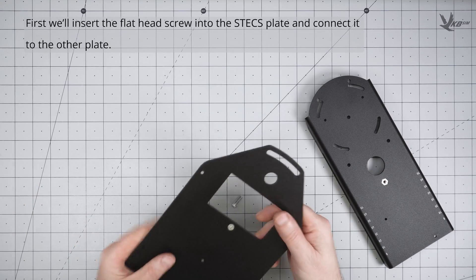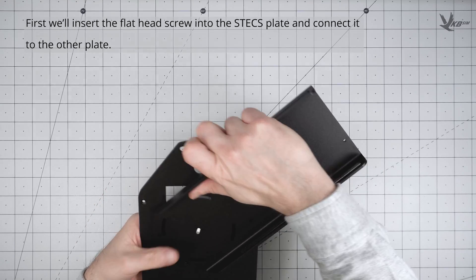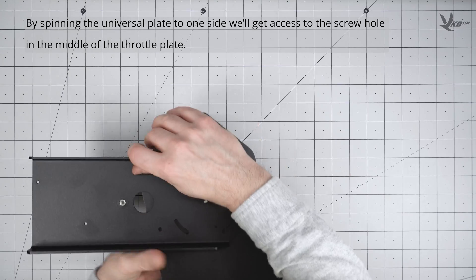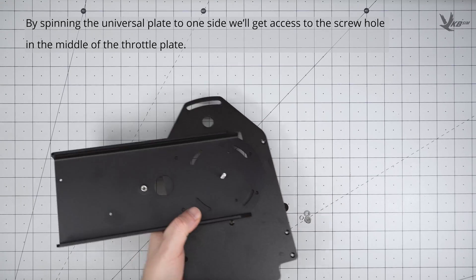Start by inserting the flat head screw into the STECS plate, and then connecting it with the universal plate. If we spin the universal plate 90 degrees from its proper orientation, you'll notice the screw holes in the middle of the throttle plate become accessible. Take this time to add a screw into it.